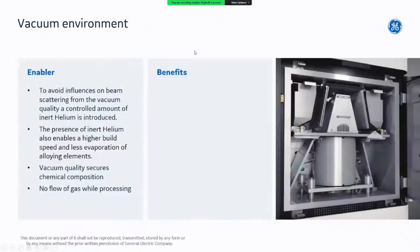Another unique feature of EBM is the vacuum environment, which is actually a prerequisite for the process to work. Since electrons are particles, if there were an atmosphere in the build chamber the electrons would scatter on atmospheric atoms, making beam control impossible. Instead, a vacuum is used to avoid any influence on the beam.